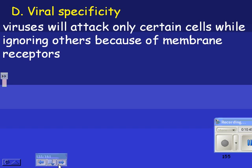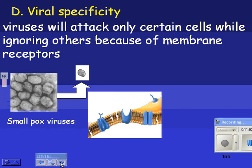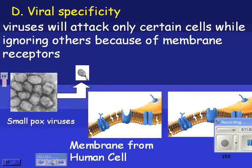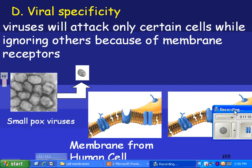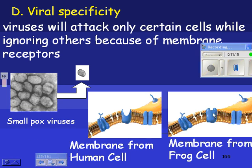Viral specificity — the last thing. Viruses will attack only certain cells while ignoring others because of membrane receptors. For example, here's a smallpox virus. This is a membrane from a human cell, and notice how it fits in there just perfectly. Frog cells do not have those receptors, so smallpox can fit into your receptors but there are no receptors on a frog.